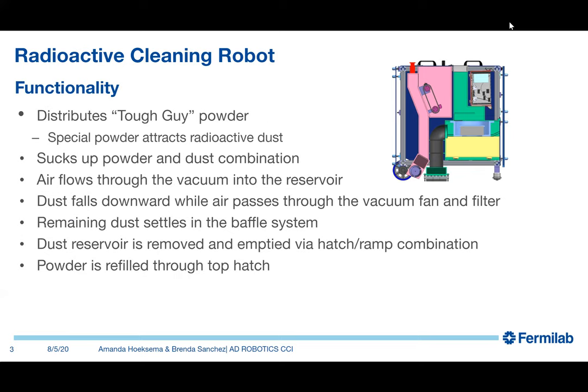The functionality of this robot is not that complex, a lot easier than you'd think. At the moment we are thinking to have it distribute what is called tough guy powder. This powder is a mixture of different oils and powders and what this does is it gets dropped down and it works kind of like a magnet for dust. It attracts everything to be combined with the powder. That way the robot can drive forward, potentially over the substance, to be vacuumed up and then the powder dust combination would flow through the air into the dust reservoir.